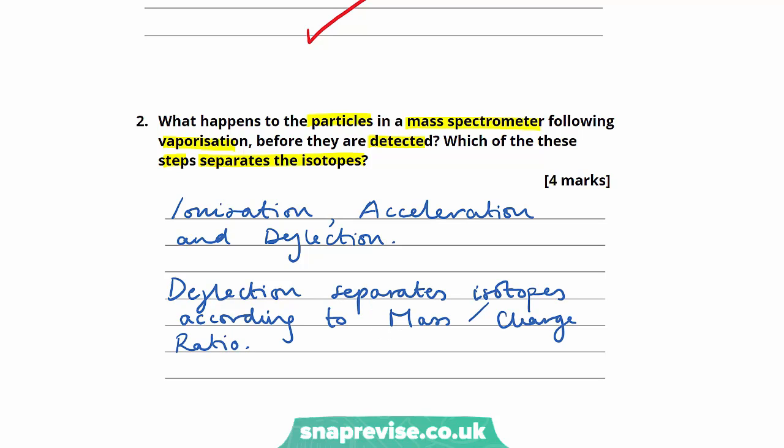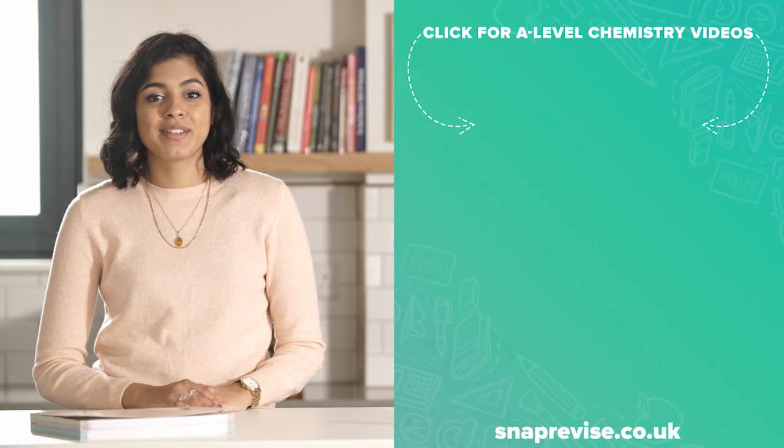So there we go, we have our complete answer. So this question is worth a hefty four marks. The first three come from correctly identifying those three steps: ionization, acceleration, and deflection. And the final mark comes from stating which of the steps separates the isotopes and we know that's deflection.